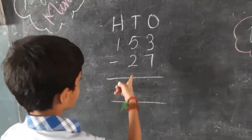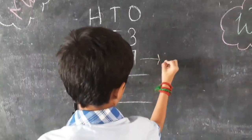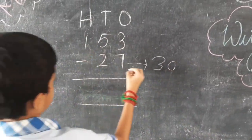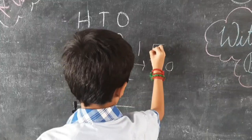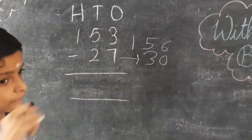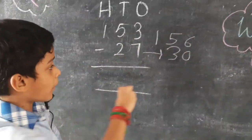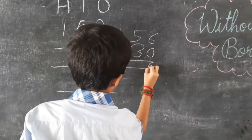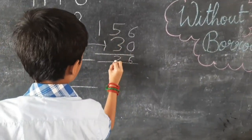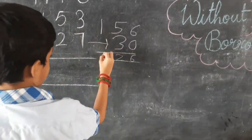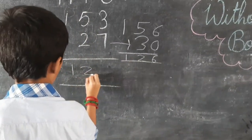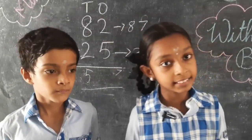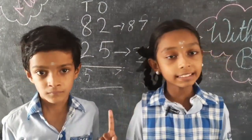See this example. 27 will become 30, and 153 will become 156. Now subtract without borrowing: 6 minus 0 is 6, 5 minus 3 is 2, and 1 stays as it is. The difference is 126. Yes, friends, now subtraction becomes very easy by using this one simple trick.